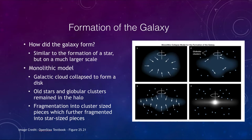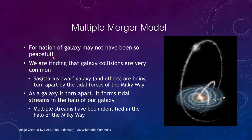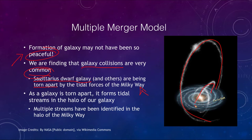Another way of thinking about this is what we call the multiple merger model, where the galaxy may not have had a peaceful formation. What we have been finding is that galaxy collisions are incredibly common and occur all the time. For example, our Sagittarius dwarf galaxy and some others are actually being torn apart by the tidal forces of our Milky Way galaxy, leaving tidal streams — leftover bits of those disrupted galaxies — several of which we can see here.